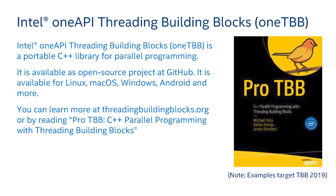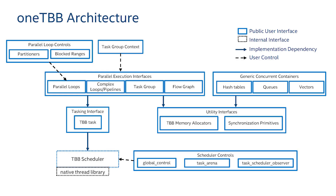You can learn more about TBB at threadingbuildingblocks.org, or you can get a copy of the book or go to Apress and get a free digital copy. TBB is a collection of building blocks that you can use to create scalable threaded applications. It includes high-level parallel execution interfaces like parallel loops — parallel for, parallel reduce, parallel scan.